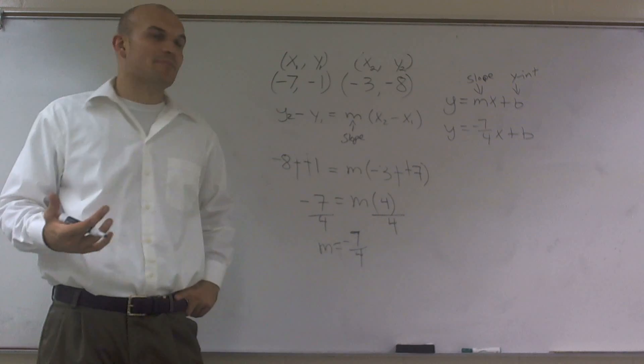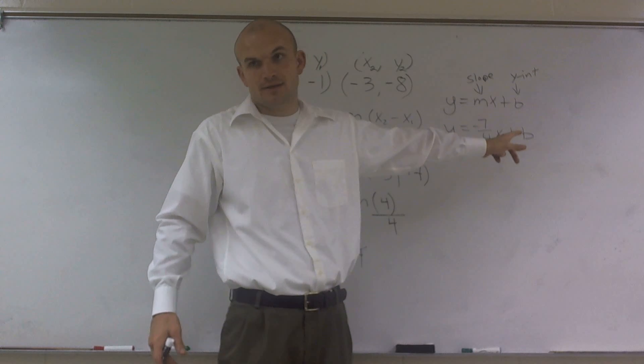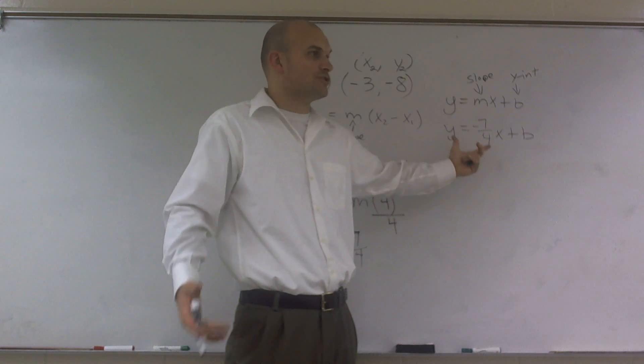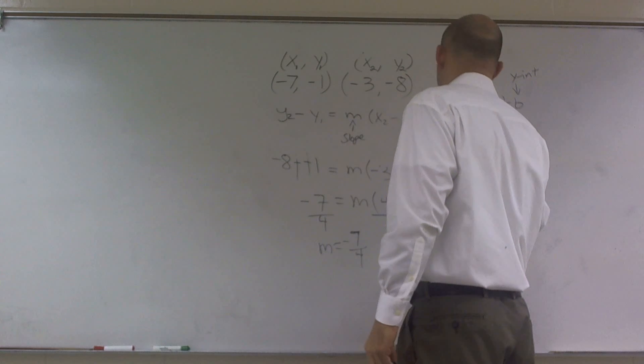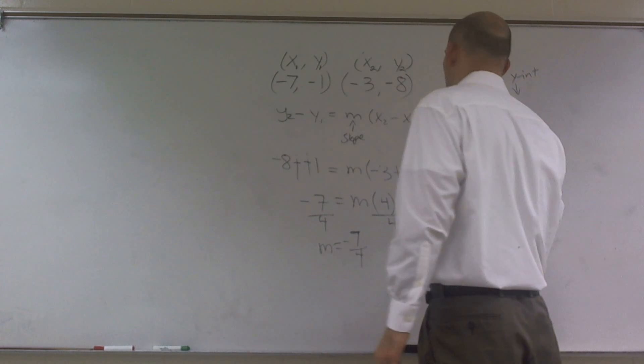So what I'm going to do is, instead of using both my points, if you notice, an equation on a line has a y and an x, right? Those are open, right? Those are open to plugging in values. So I'm going to rewrite this equation. I'm going to do the same one, but now I'm only going to pick one point to plug in.